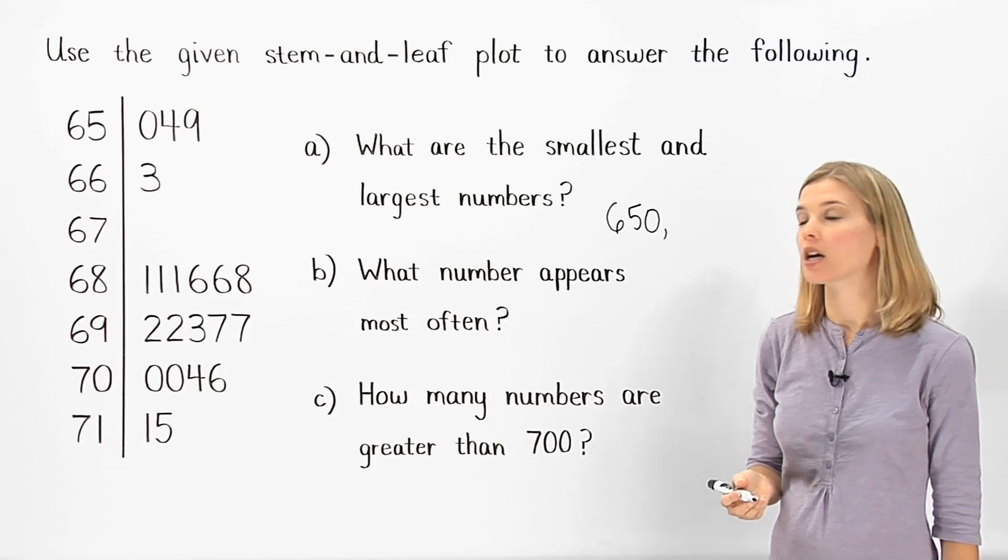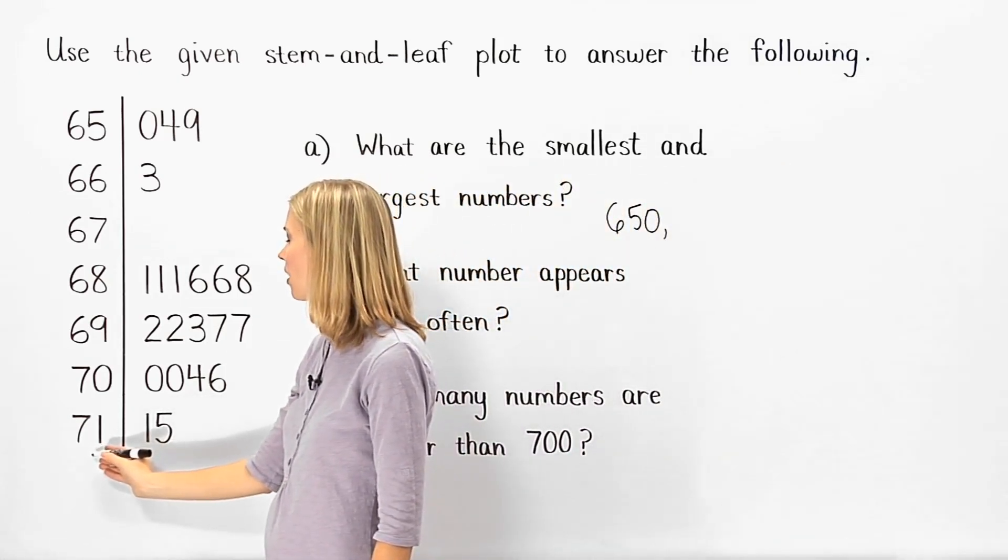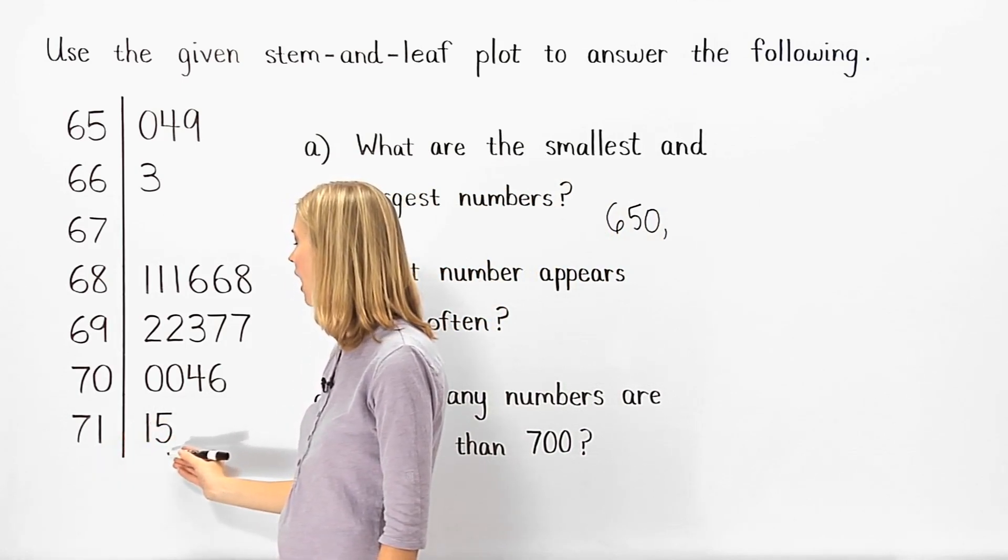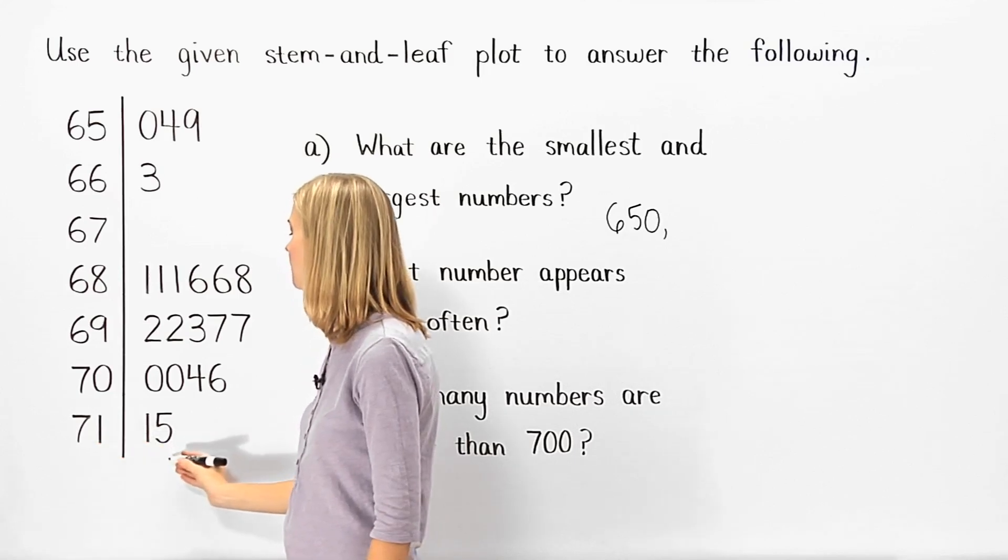To find the largest number, notice that the largest stem in the plot is 71, and the largest leaf for this stem is 5, so the largest number in the data set is 715.